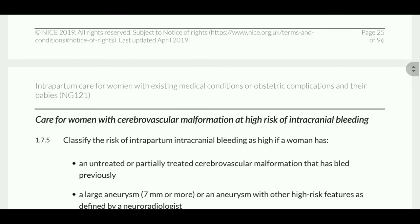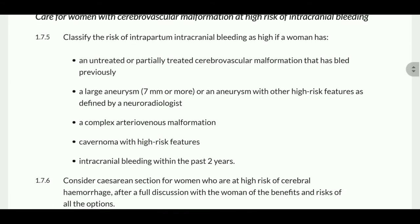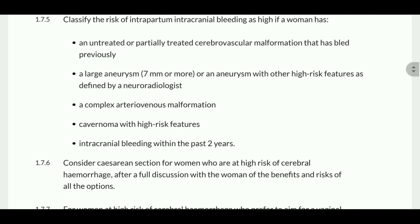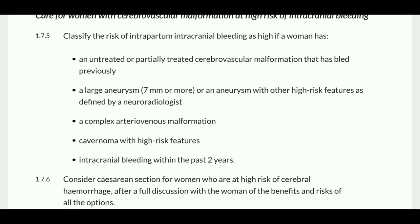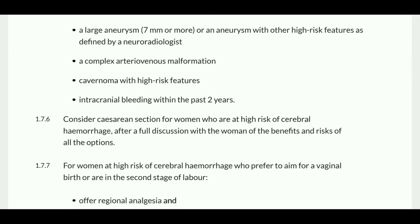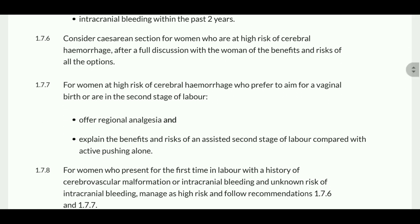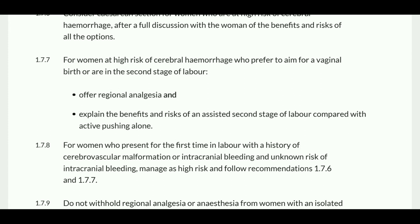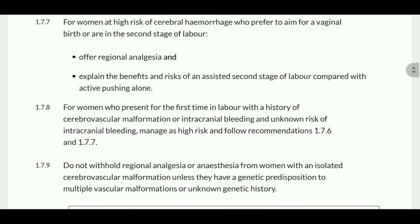Classify a woman as high risk of intracranial bleeding if she has an untreated or partially treated cerebrovascular malformation that has bled previously, a large aneurysm of 7mm or more, an aneurysm with other high-risk features defined by the neuroradiologist, a complex arteriovenous malformation, or an intracranial bleed within the past two years. Consider cesarean section for women who are at high risk of cerebral hemorrhage, following full discussion with the woman of the benefits and risks. For women at high risk of cerebral hemorrhage who prefer to aim for vaginal birth, offer regional analgesia in the second stage and consider the benefits and risks of an assisted second stage compared with active pushing.